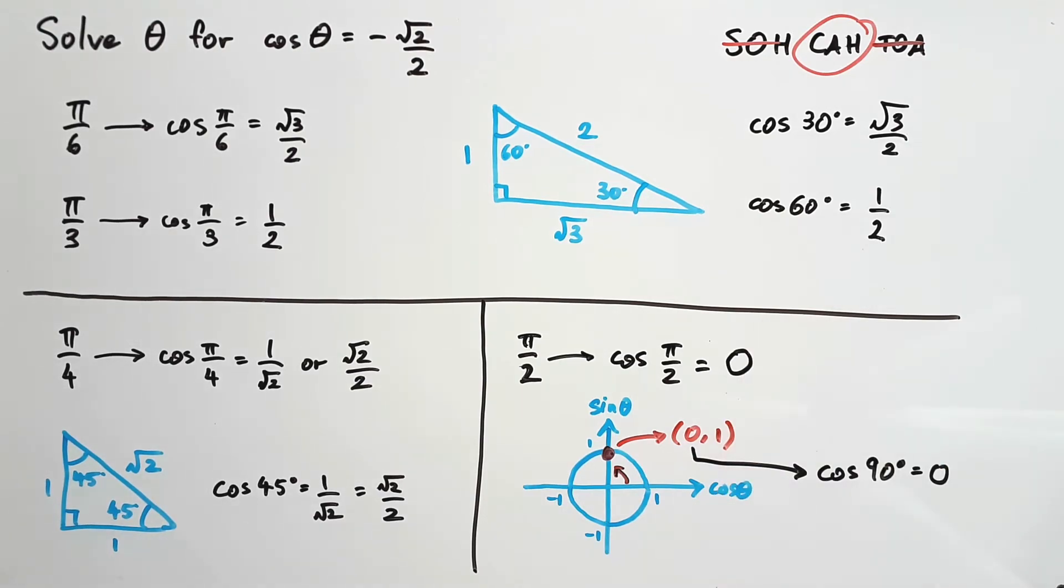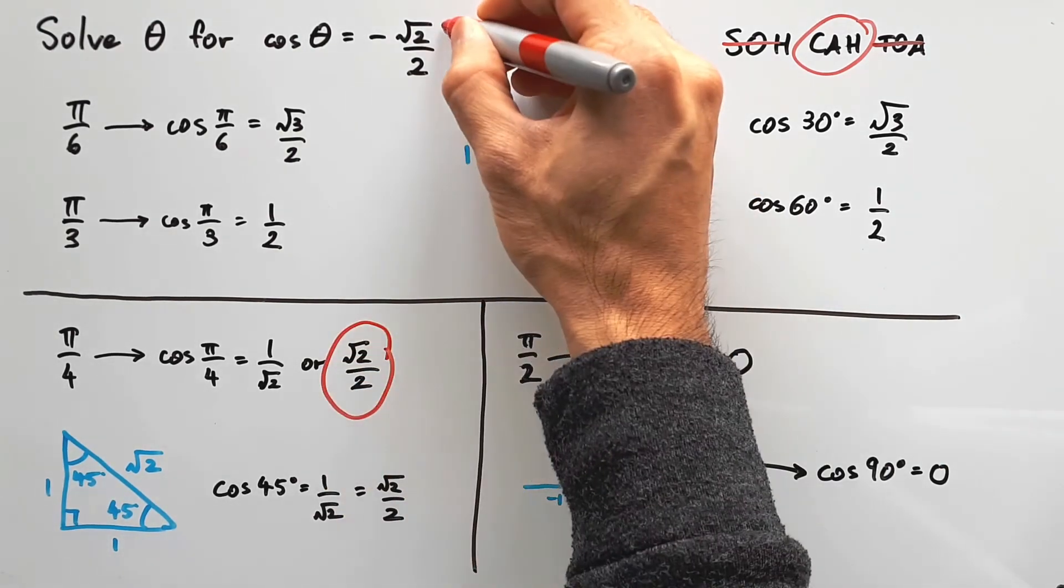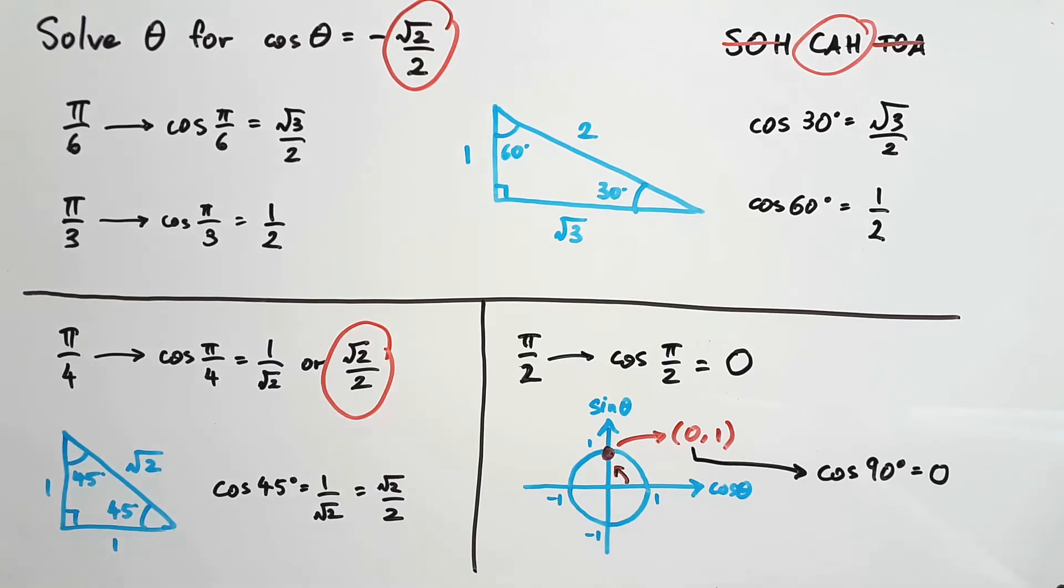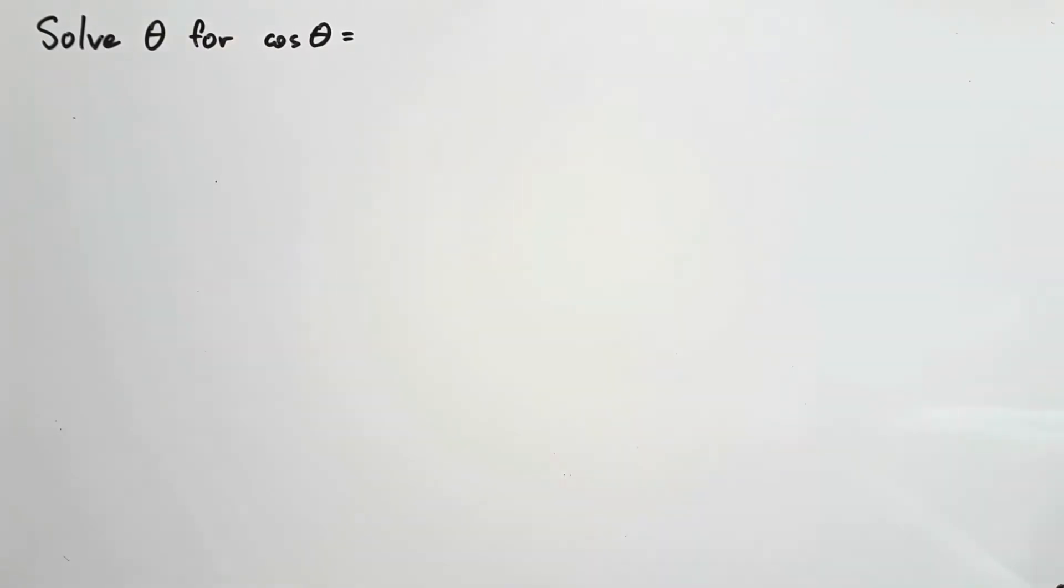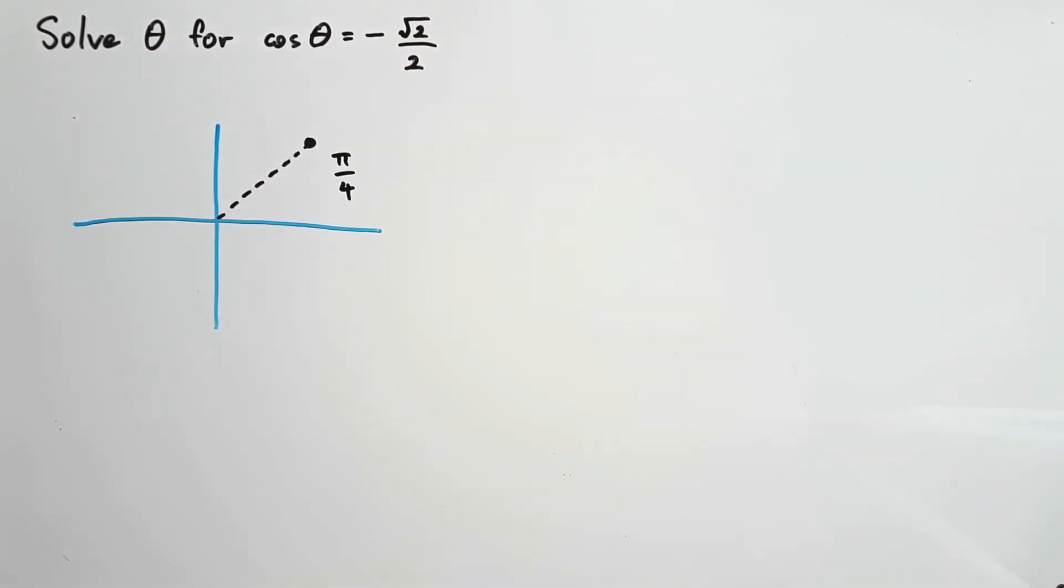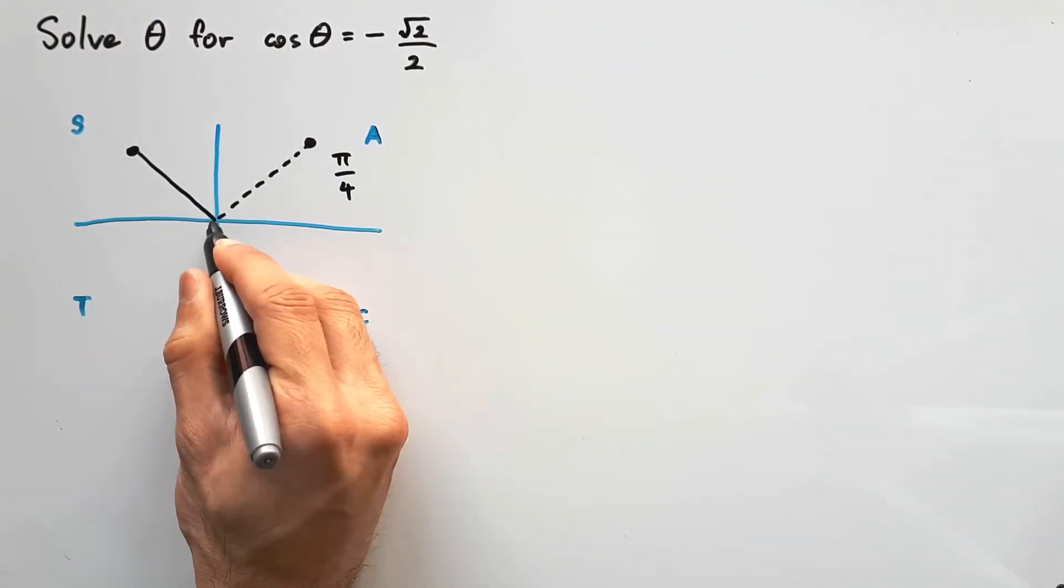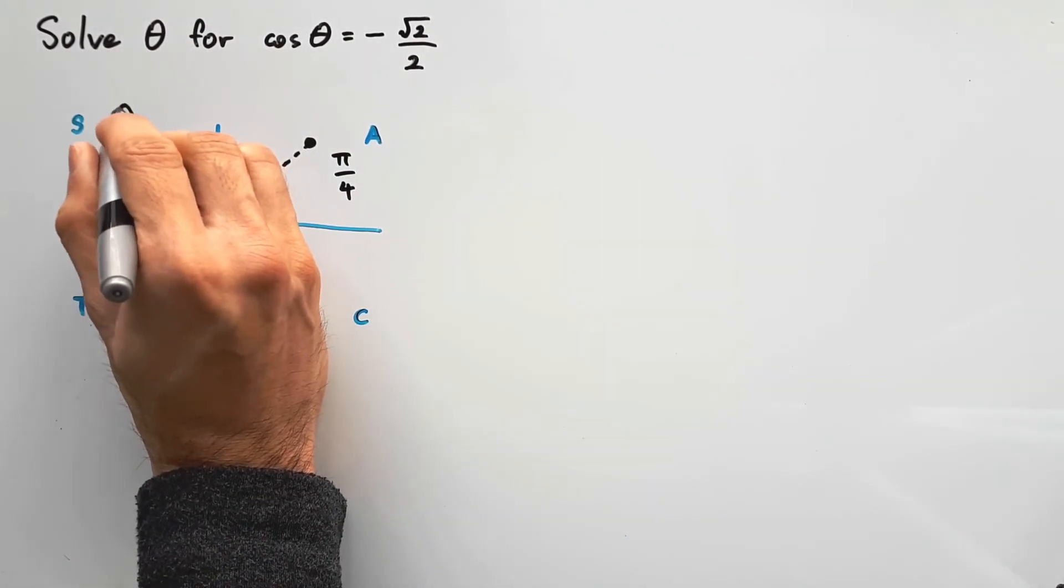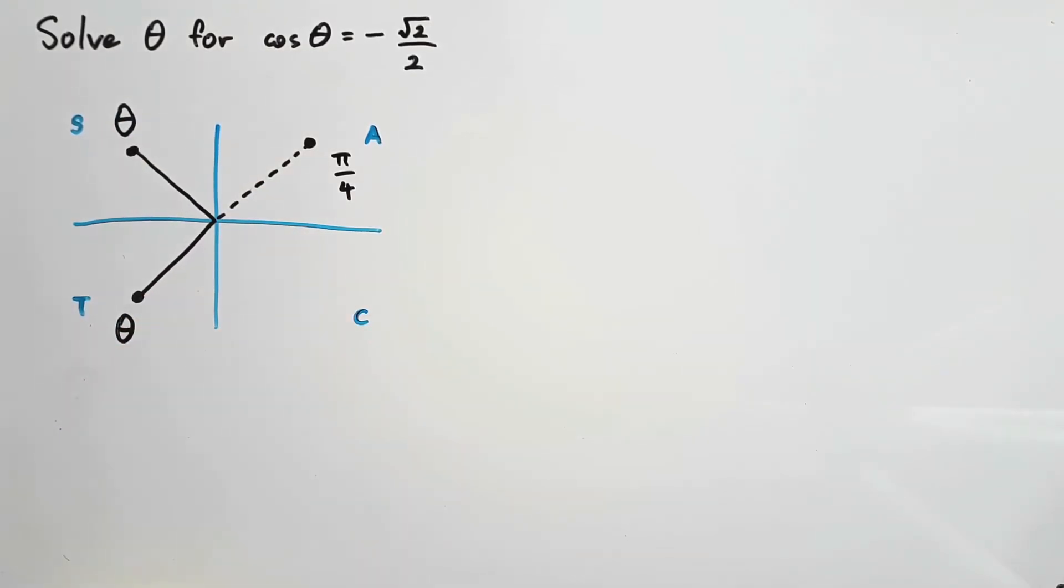By inspection, we notice cos π/4 is a match to the right-hand side of our question, but the signage is different. Why? Because they're not in the first quadrant. According to the CAST system, the second and third quadrants give negative cos values. So theta must be in those two places, which also means there's two answers to this problem.